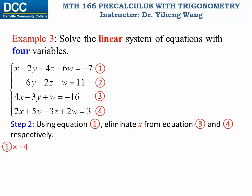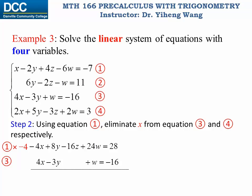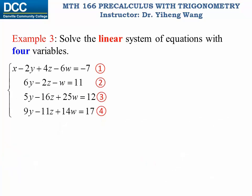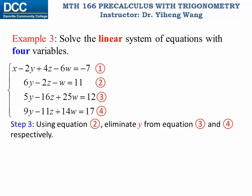Applying the method of elimination: equation one multiplied by negative four, equation three stays the same. When I add them together, x gets cancelled out, and I'm left with a new equation three. Then for equation four: equation one multiplied by negative two, equation four stays the same. Adding them together cancels out x, giving a new equation four. Now since equations three and four should not have variable y either, the next step is to use equation two to eliminate y from both equations three and four. We cannot use equation one anymore because we have already eliminated x from equations two, three, and four — we do not want to introduce x back.